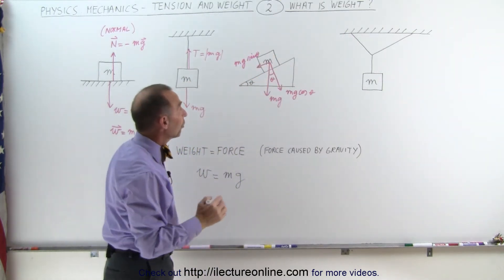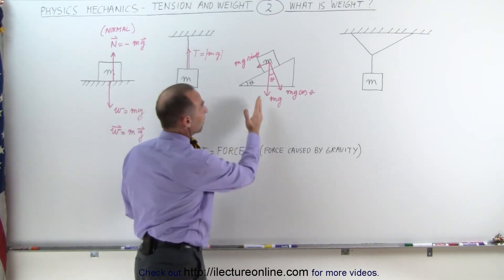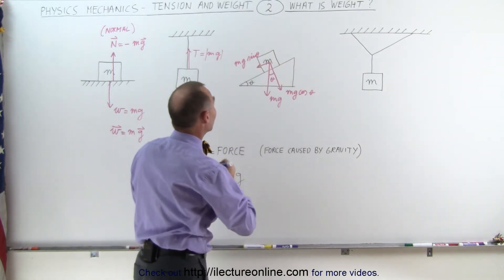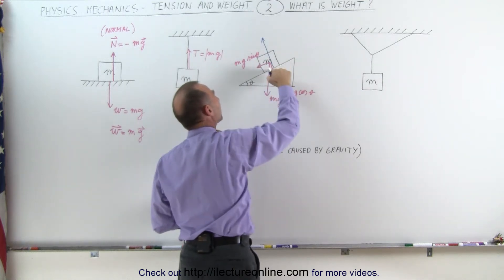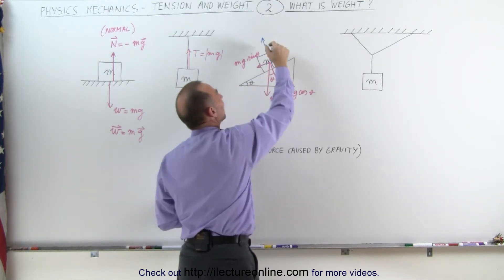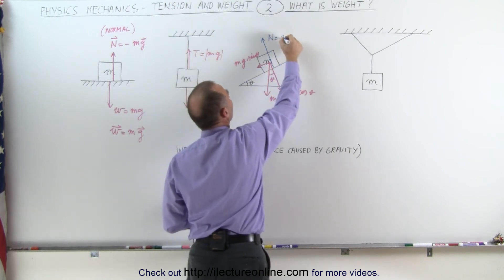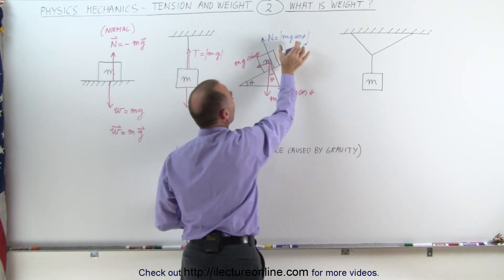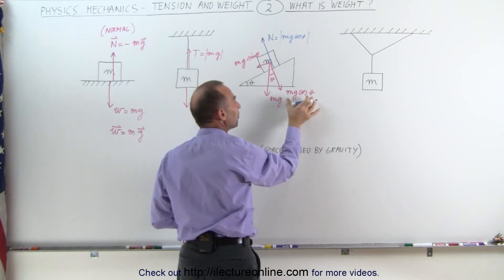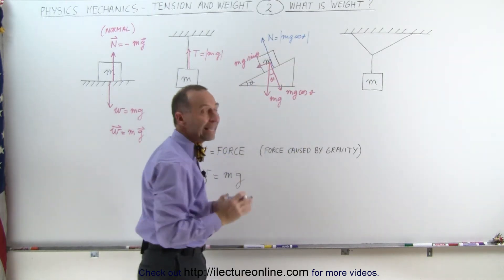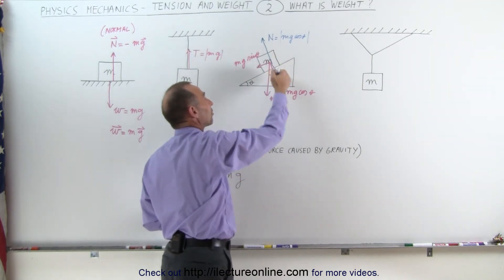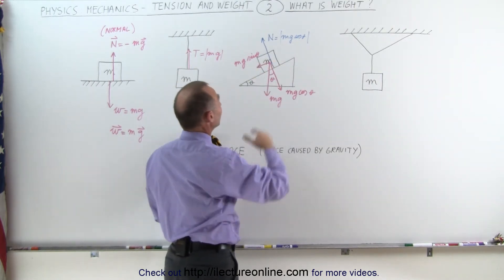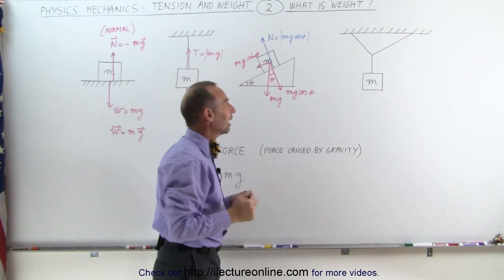We still have a normal force pushing back, but in this case the normal force is perpendicular to the surface — not opposing mg directly. The normal force is in the opposite direction to the perpendicular component of the weight, so the normal force equals mg cosine of theta in magnitude. There will be no acceleration perpendicular to the surface, but if there is no friction, the parallel component mg sine of theta will cause the object to accelerate down the incline.